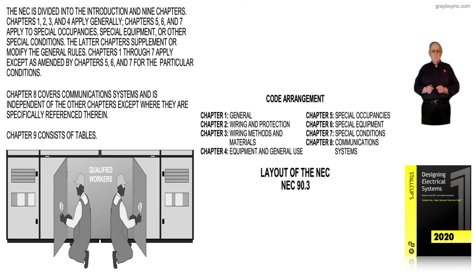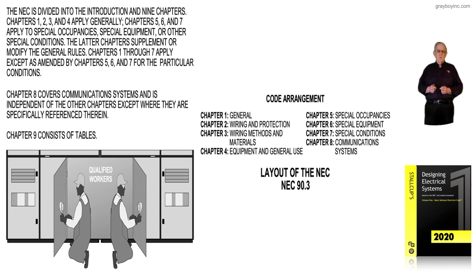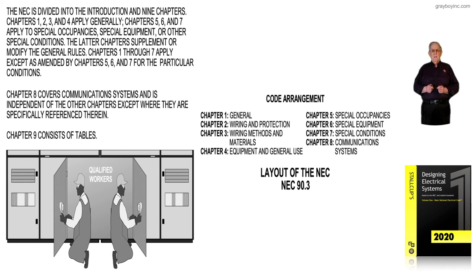As previously stated, chapter 8 stands alone, and we never leave chapter 8 without being referred out to one of the other chapters for particular requirements — maybe for grounding or other pertinent chapters that would need to be used with chapter 8, which covers communication-type systems. This is basically the layout of the code, and NEC 90.3 outlines what you see in this illustration.